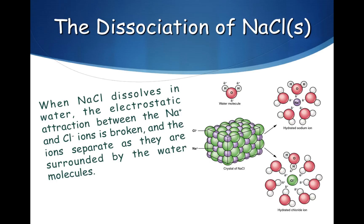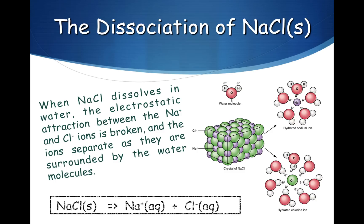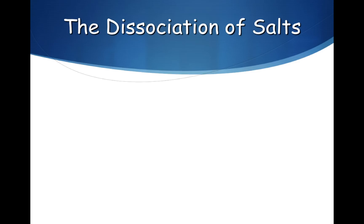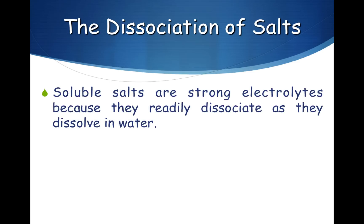Look at this diagram that shows the dissociation of sodium chloride. When sodium chloride dissolves in water, the electrostatic attraction between the sodium ions and chloride ions is broken, and the ions separate as they are surrounded by the water molecules. It's important to know that it's soluble salts that are strong electrolytes — soluble salts are strong electrolytes because they readily dissociate as they dissolve in water.